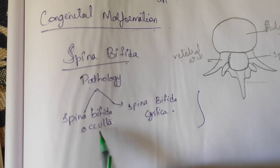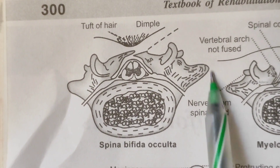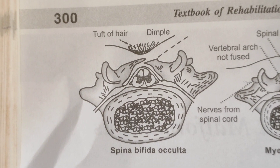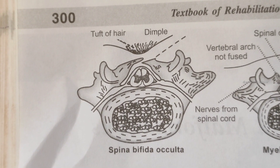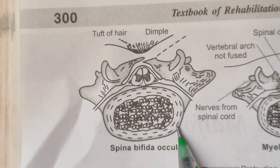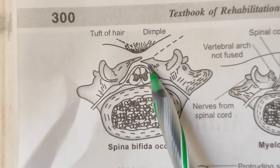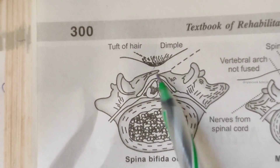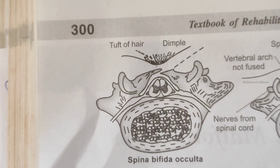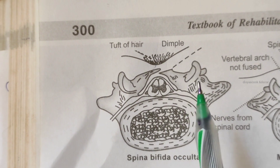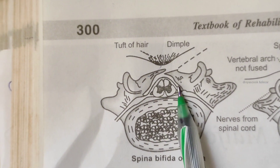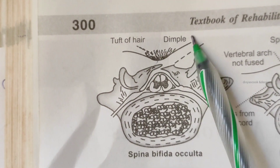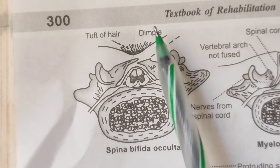First, spina bifida occulta. It is observed in only a small percent of children. This is a defect in the fusion of the laminal arches, but this may not be evident on X-ray. There is a dimple in the skin over the vertebral area.